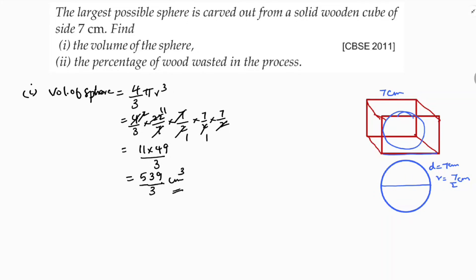So this is the volume of the sphere. If you want you can write it in decimal, but since they ask for percentage, it is better to leave it as a fraction. Because we need to subtract it from the cube volume. Now I will find the percentage of the wood wasted by calculating volume of cube minus volume of sphere.